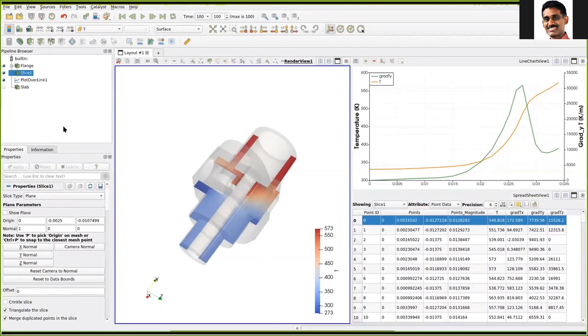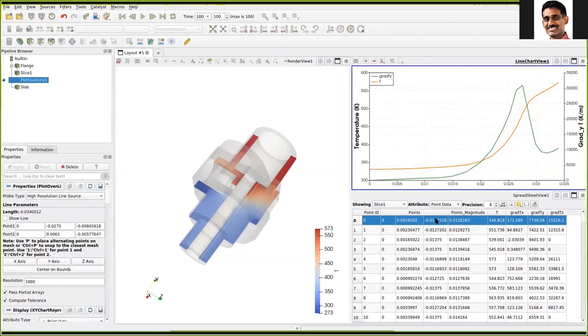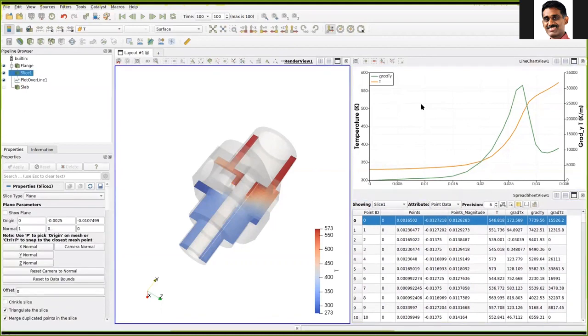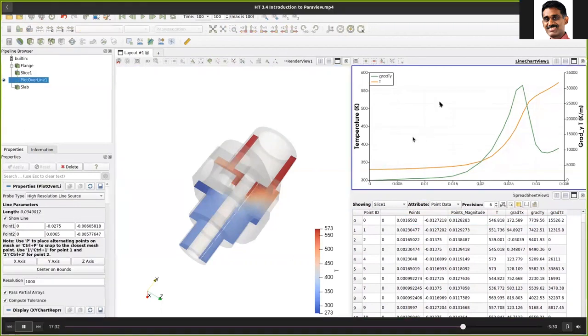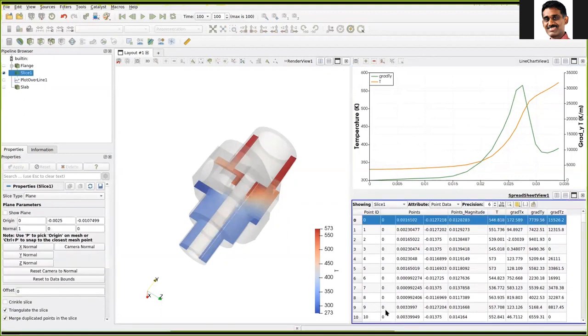Similarly, this is the active window now. When we select an active window, things in the panels also change. This means that for a given active window, there is a corresponding source and its property.